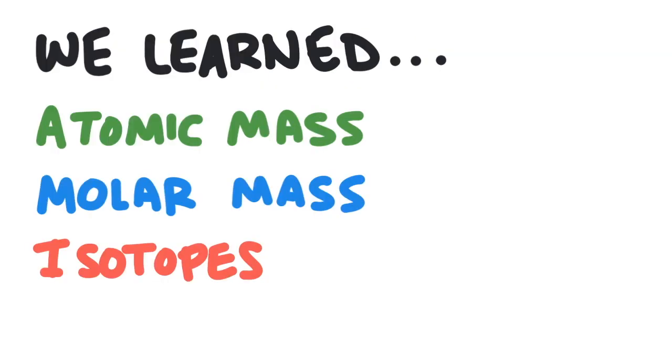So in this video, we learned the atomic mass is the average mass of a single atom expressed in AMU. The molar mass is the mass of an entire mole of atoms expressed in grams. Isotopes are atoms that have different mass because they have different numbers of neutrons. Thanks for watching.